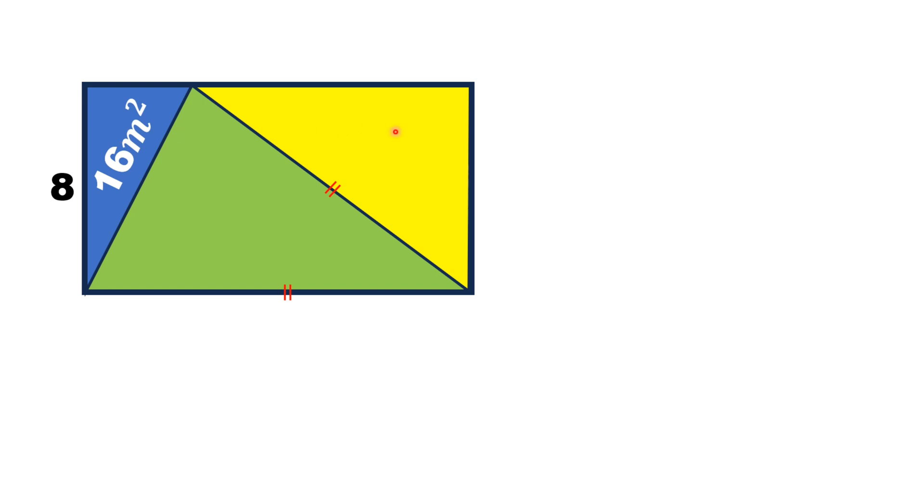while the green shaded triangle is an isosceles triangle. The two sides which are equivalent are equal to the length of this rectangle.